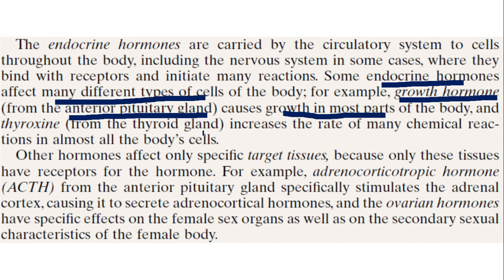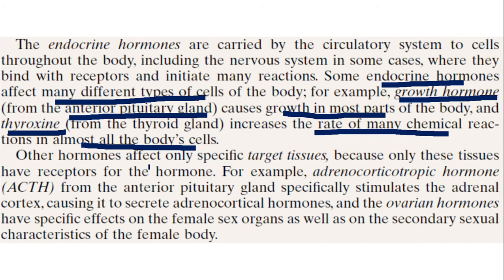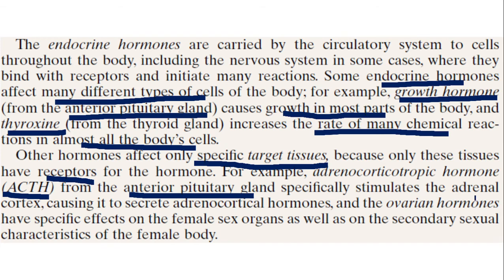Another example is thyroxine, the thyroid hormone produced from the thyroid gland. It increases the rate of chemical reactions in almost all cells of the body, so there is no specific area where it acts. There is another type of hormonal action where hormones affect only specific target tissues, because only those tissues have a specific receptor for that hormone. A good example is adrenocorticotropic hormone (ACTH), produced from the anterior pituitary.